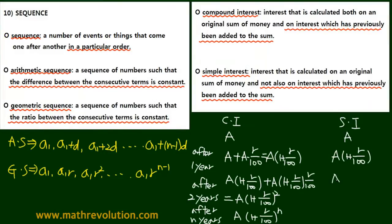But after two years, we get A times 1 plus 2R over 100. So the final result, after N years, we'll get A times 1 plus NR over 100.